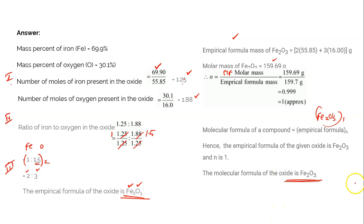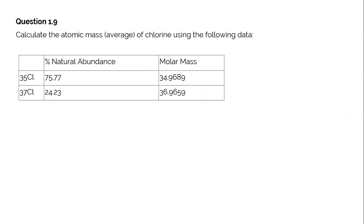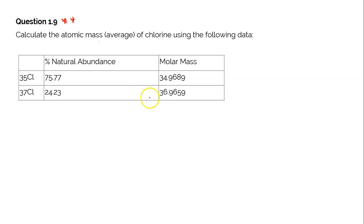I hope you could understand this. In case you have something to ask, please let me know in the comments. Let us now go on to question number 1.9, which is considered one of the important questions in your final examinations. Calculate the average atomic mass of chlorine using the following data. They are talking about two isotopes of chlorine: chlorine-35 and chlorine-37, with their percentage of natural abundance and molar masses given individually.